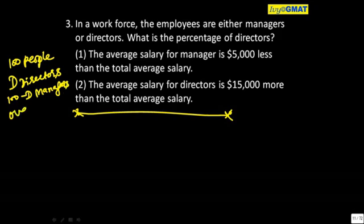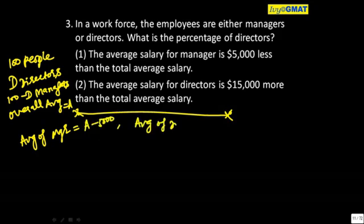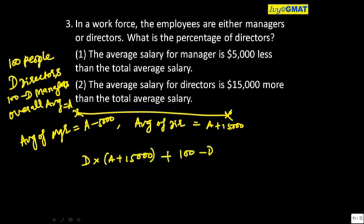Suppose the overall average is equal to A. So average of managers will be A minus 5000, and average of directors will be A plus 15000. Right? Let's make a full equation. D is the number of directors times the average of directors, which is A plus 15000, plus 100 minus D is the number of managers times the average of managers, which is A minus 5000, is equal to the total number of people, 100, times the total average, A.